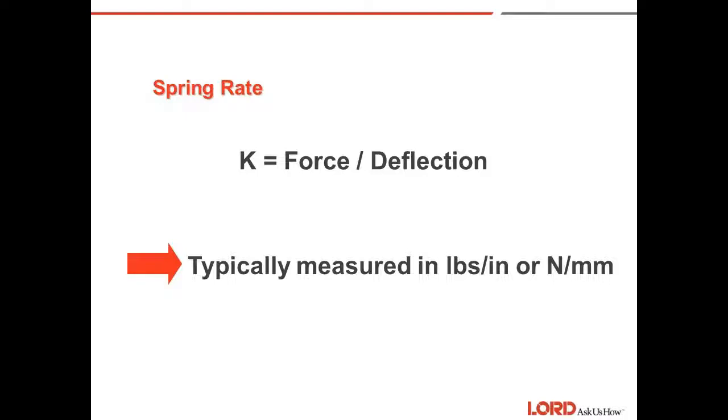Elastomeric springs also differ from steel springs in that their stiffness is sensitive to the rate or speed of deflection. If an isolator or rubber spring is deflected quickly, it appears stiffer than if it is deflected slowly.